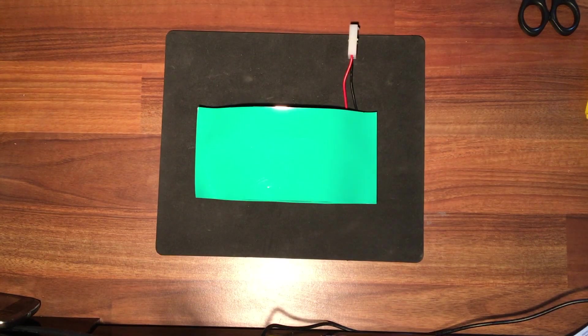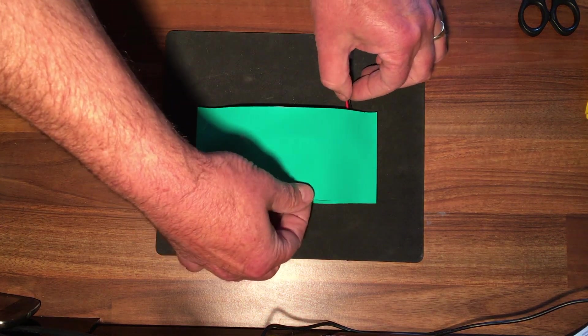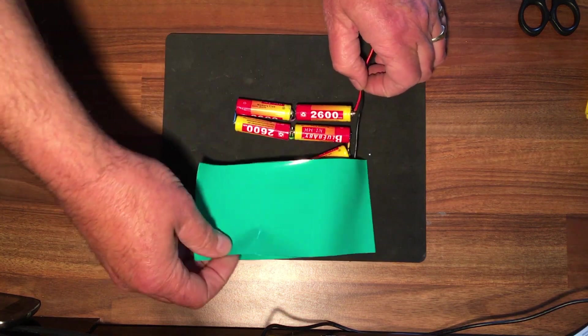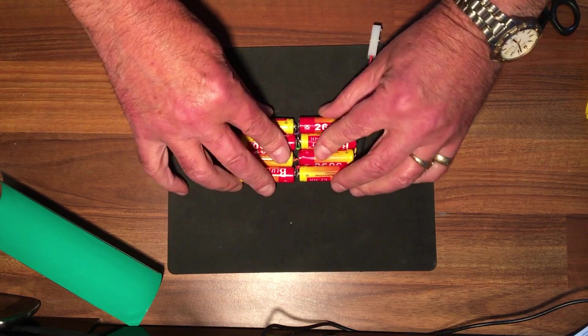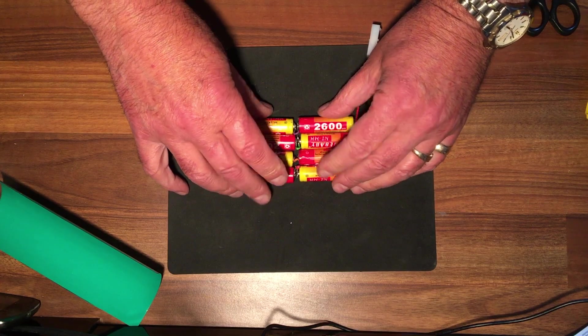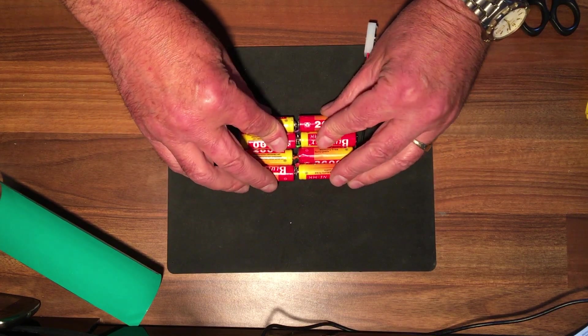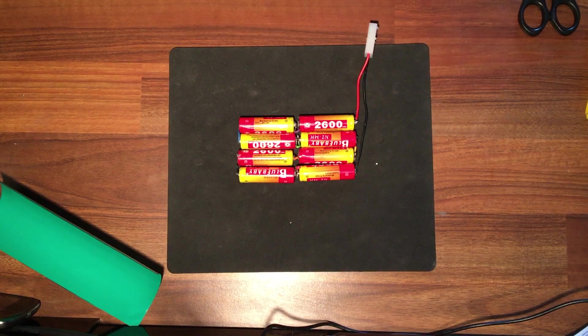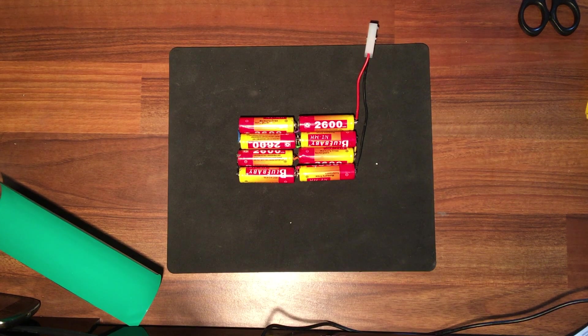Now just before I heat up this heat shrink, I'm going to take the batteries back out again. Because they're all loosely moving around, as soon as the heat shrink hits it and compresses, it'll push the batteries every which direction. So what I'm going to do is get some good old duct tape and put the duct tape on it to keep it in shape.